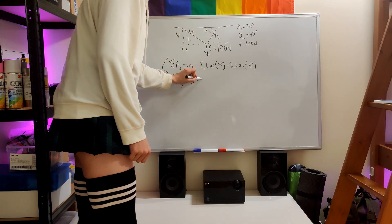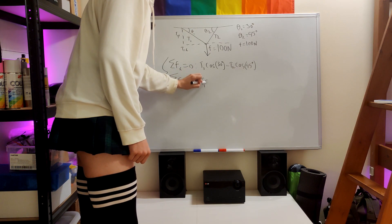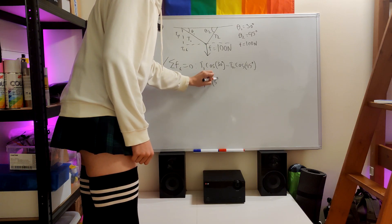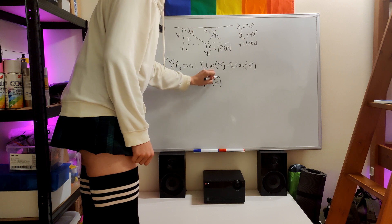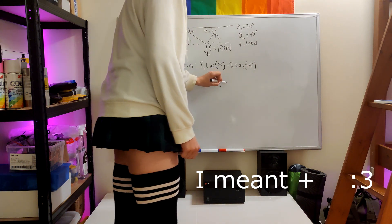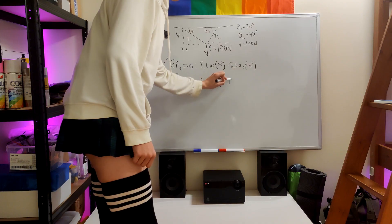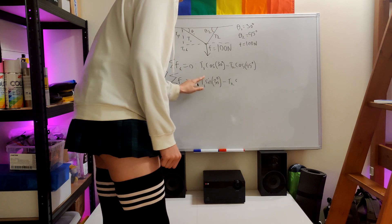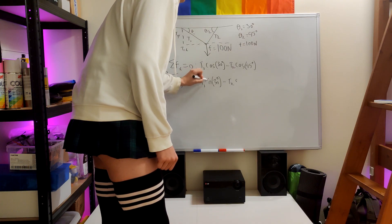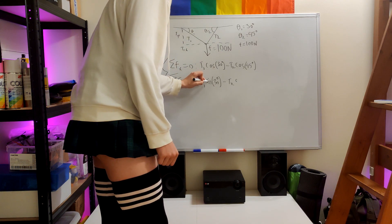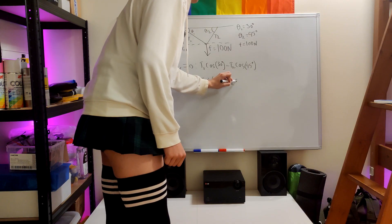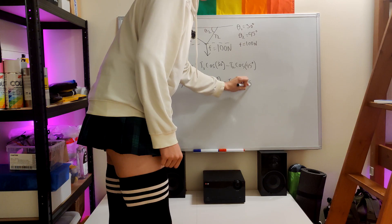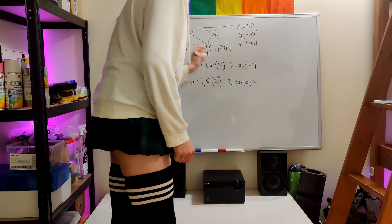So T1 sine of 30 degrees minus T2 times... oh yes, it was sine, I messed up... sine of 45 degrees, like that.